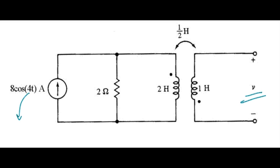So good starting point. Let's determine the operating frequency, that's 4 radians per second. I'll start to write down some of the phasor quantities here. Two ohm resistor stays as it is.